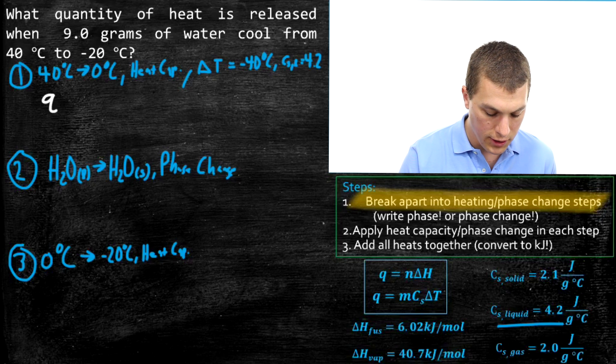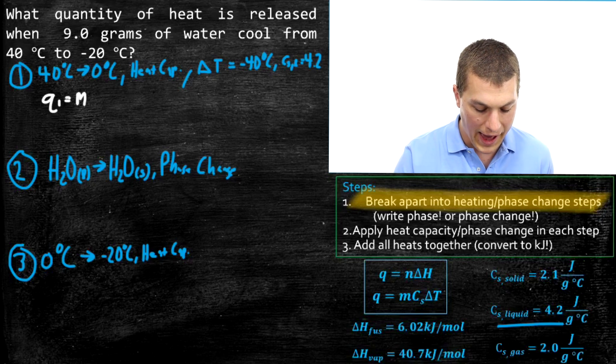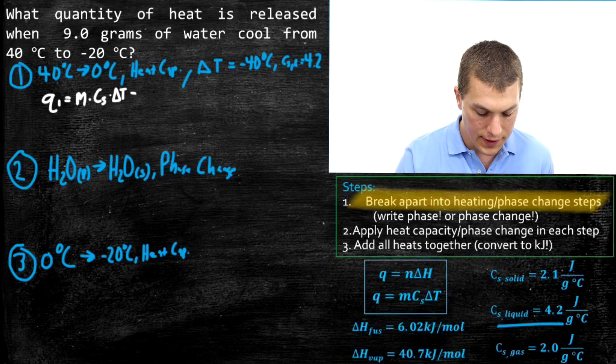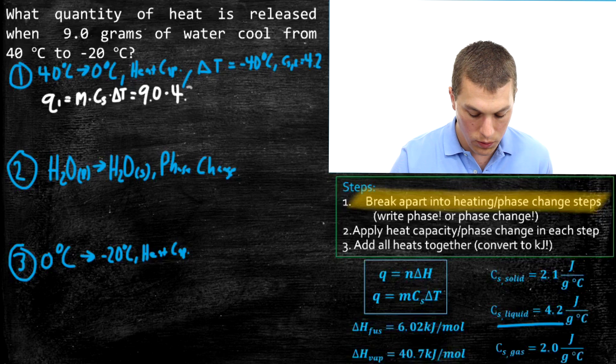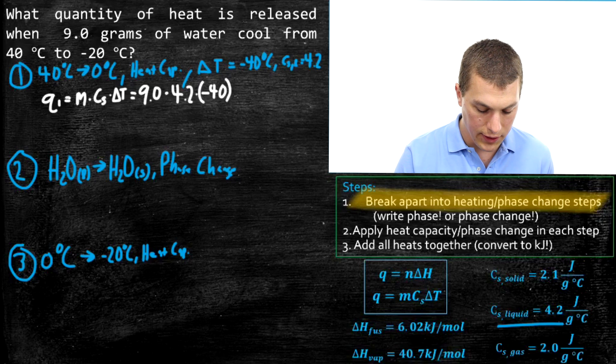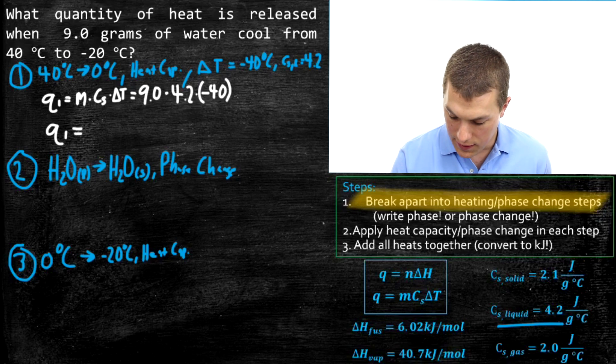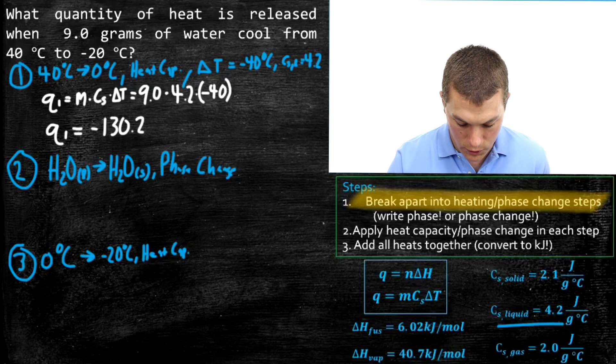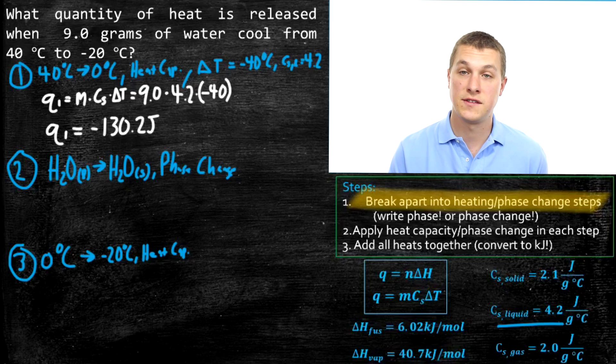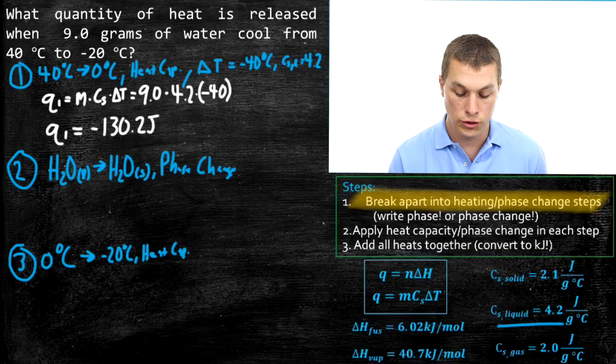Okay, so now I'm pretty much set to do my heat capacity problem. I know that Q, and I'm going to call it Q1 because this is the Q of our first step, is equal to mass times our heat capacity times our delta T. Our mass in this case is 9.0 grams, our heat capacity is 4.2, and our change in temperature is negative 40 degrees. I'm going to put that in parentheses just so I remember that negative sign. When I calculate that Q, that's going to give me out negative 130.2 joules. So that's the heat released in step one. As that water cools it's giving off heat to its surrounding. How much heat? 130.2 joules.